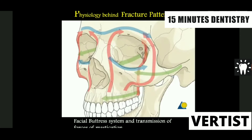The physiology of these fractures relates to the facial structure's buttresses — the struts where various forces get transmitted. This transmission can happen during mastication or during any parafunctional load. Usually, fractures also happen along those same lines.